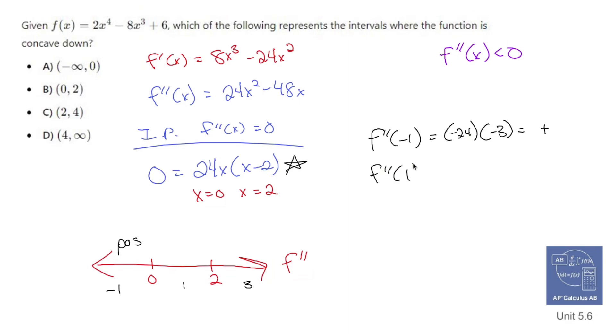f double prime of regular 1 is going to be 24 times 1, which is 24. And 1 minus 2, which is negative 1. 24 times negative 1 is negative 24, which is negative. So, so far, you are what I want, to quote a song from Grease.